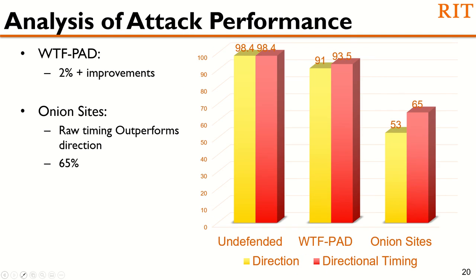At this point, we know timing features render some value in terms of information leakage and classification. Now let's analyze and compare the attack performance of directional timing with direction-only representation. Our experiments show that the attack performance of direction-only and directional timing are identical at 98.4% for the undefended dataset. However, for WTF-PAD, we get a performance boost of over 2% with the directional timing representation. And for the onion sites, directional timing outperforms direction by 12%.